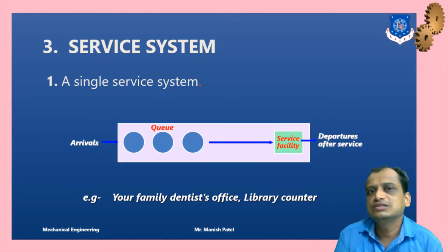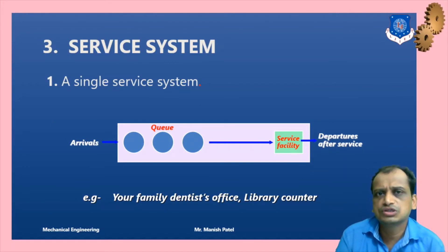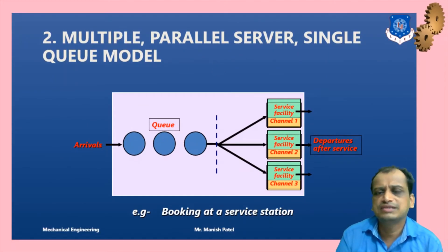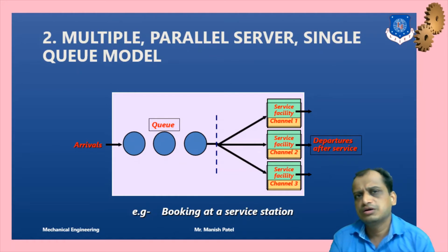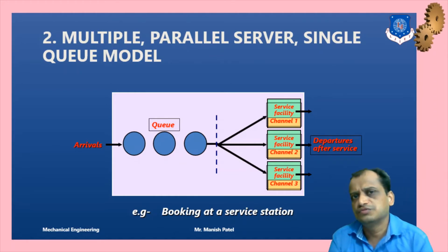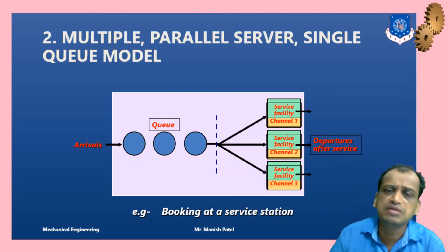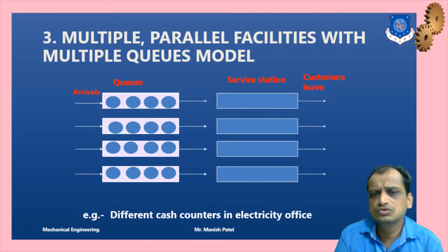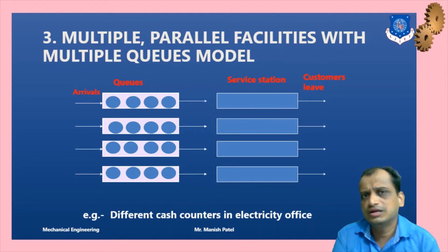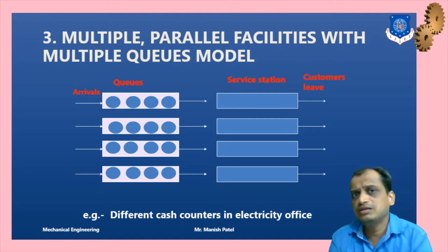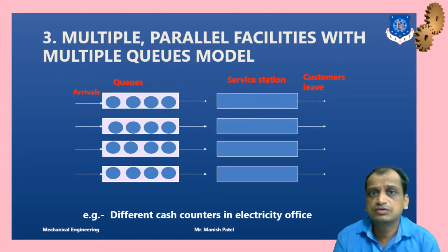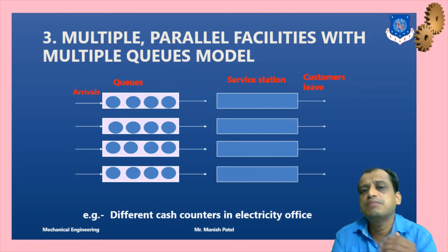For the service system, a single service system has one server — for example, when visiting the dentist, you wait in a single queue and are served one by one. Next, multiple parallel servers have one queue with different servers; if a server is empty, you are served from there. Multiple parallel facilities with multiple queue modules is an example seen at electricity office bill payment counters or banking areas, where different queues exist for different facilities and different counters serve as servers.